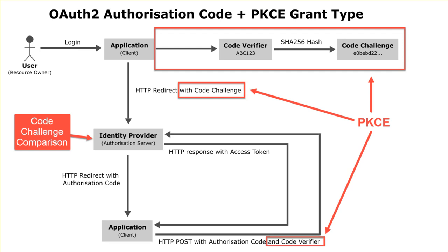To highlight the differences between the authorization code grant type and PKCE, the PKCE-specific steps are highlighted. At the top we have the generation of the code verifier and the code challenge. The application includes the code challenge as part of the redirect to the identity provider. And when the application receives the authorization code, it sends back the plain text code verifier, which is then checked by the identity provider. If those hashes match, it's deemed a secure transaction and the access token is sent back.